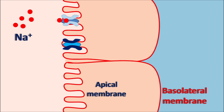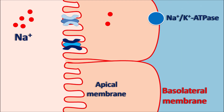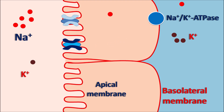Sodium can enter through the sodium channels present on the apical membrane, but it is still within the renal tubular membrane and not yet transported outside. In order to transport sodium outside, at the basolateral membrane, one pump is present — the sodium-potassium ATPase pump. This pump is an antiporter which pumps sodium outside and potassium inside. So when sodium goes outside, potassium enters inside, and this potassium within the tubular membrane is then secreted into the lumen through the potassium channels.